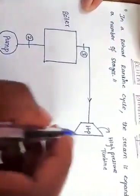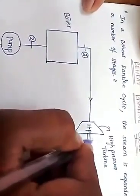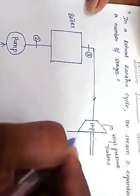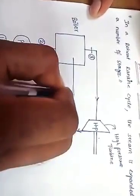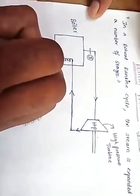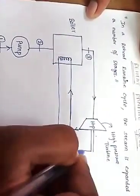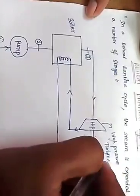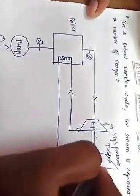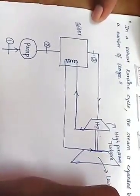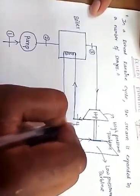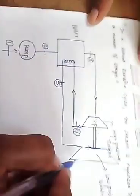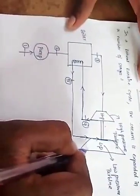After the boiler, the working fluid goes to the high pressure turbine and gives some work. Then after coming out from the high pressure turbine, the steam goes again into the boiler for reheating — it gets reheated there. Then it comes back and passes through the low pressure turbine. This point is 3, the next is 4, and coming out this is 5.